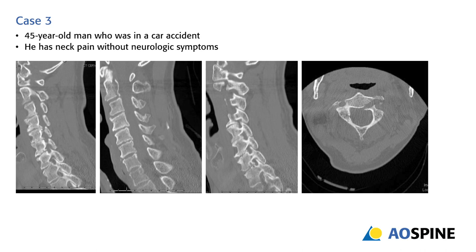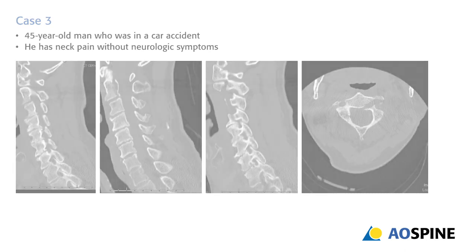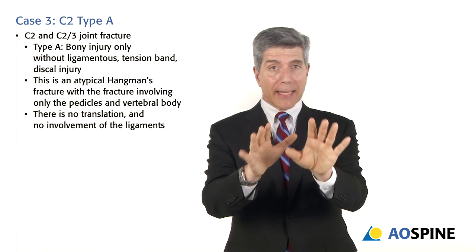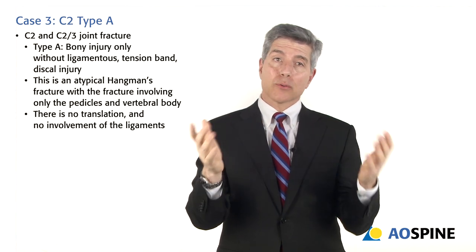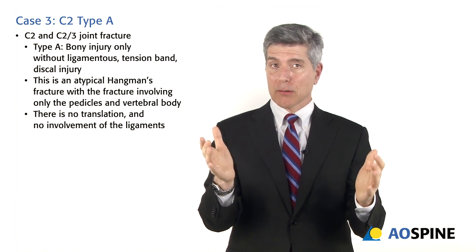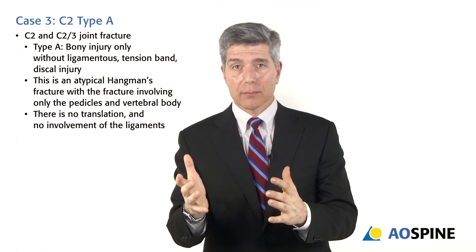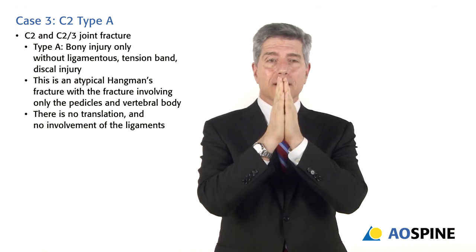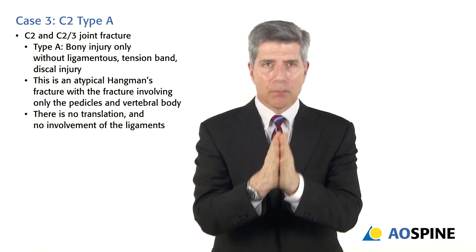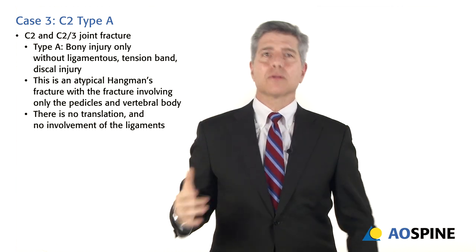Case three: an atypical hangman's fracture in a 45-year-old gentleman. There's a piece of bone avulsed off the body with the posterior elements. If the anterior body moves anteriorly while the ring stays posteriorly, the spinal cord can be compromised. However, it's bone only — no ligamentous disruption, no tension band disruption, no translation — so it's a type A injury, and the patient has no neurologic deficit, so N0.